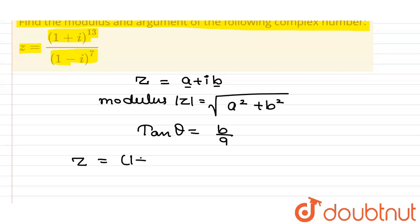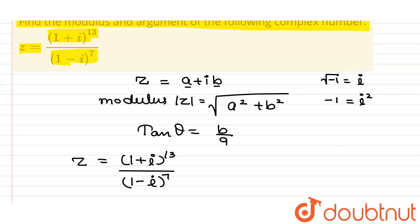Z equals (1+i)^13 divided by (1-i)^7. Recall that i = √(−1). Squaring both sides: i² = −1. Then i × i = i², i × (−i²) = i³, and further i⁴ = 1. We can find all higher powers from this cycle.